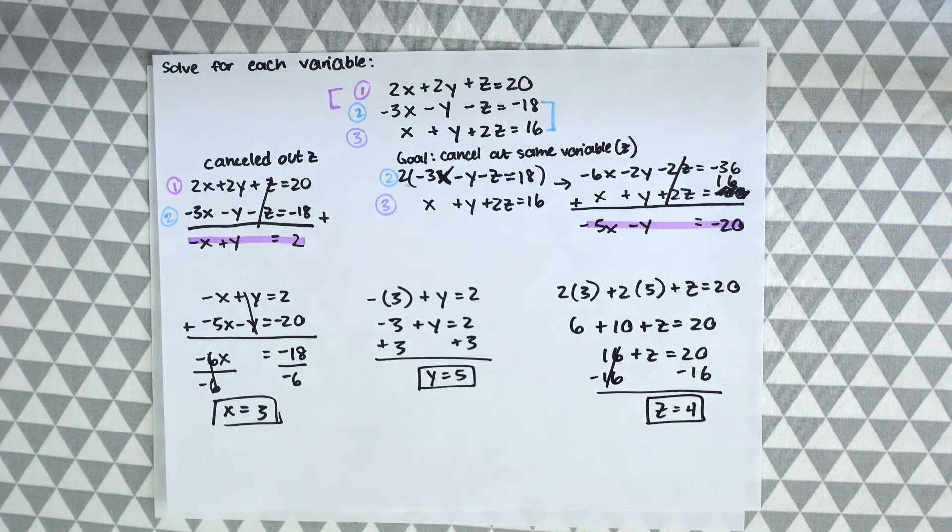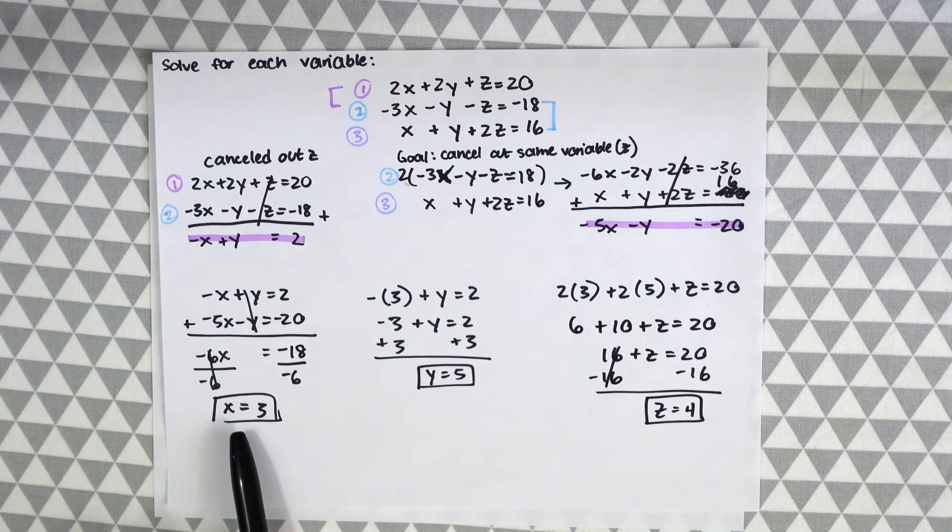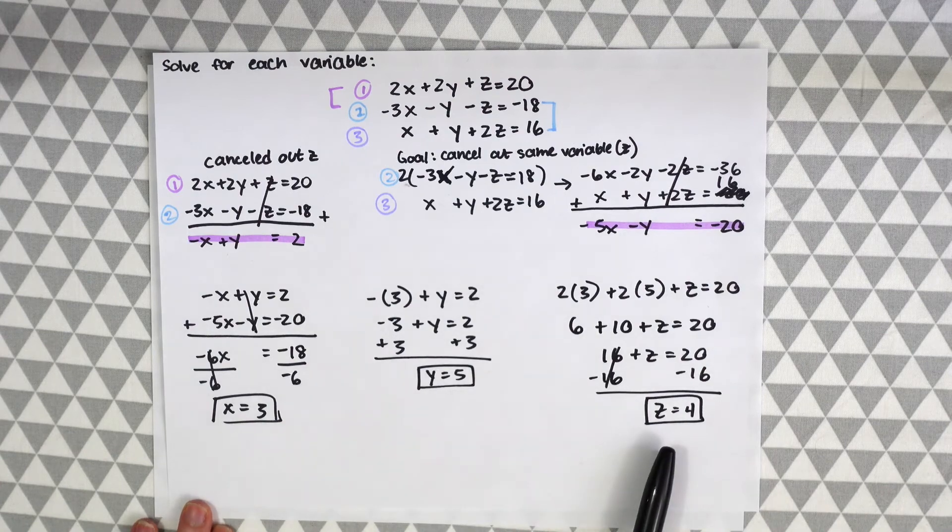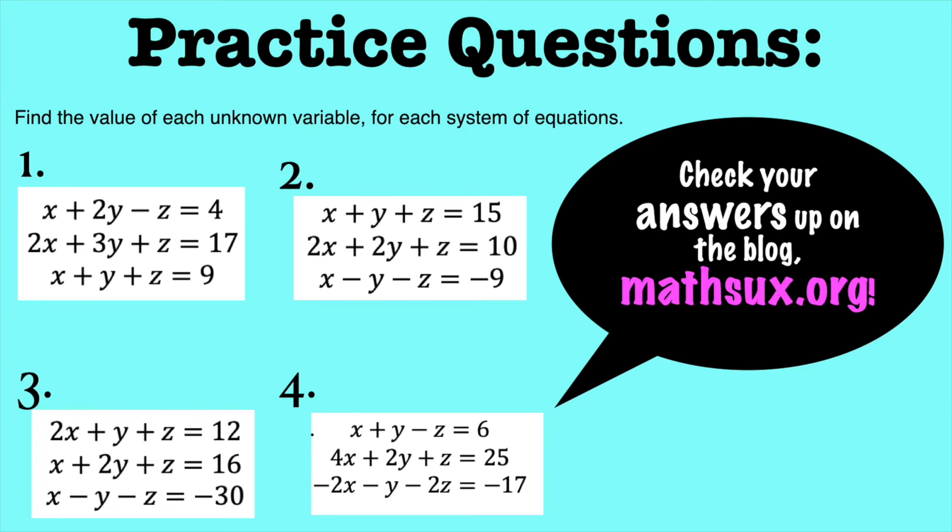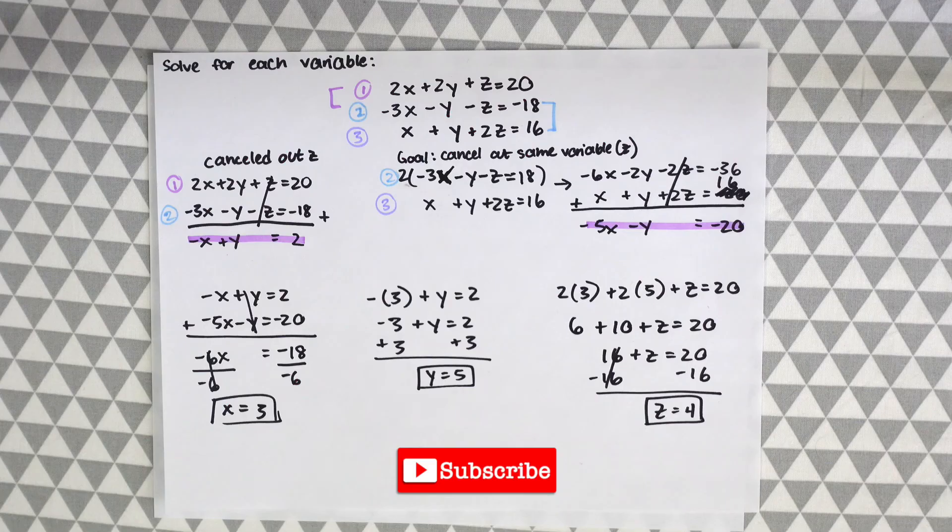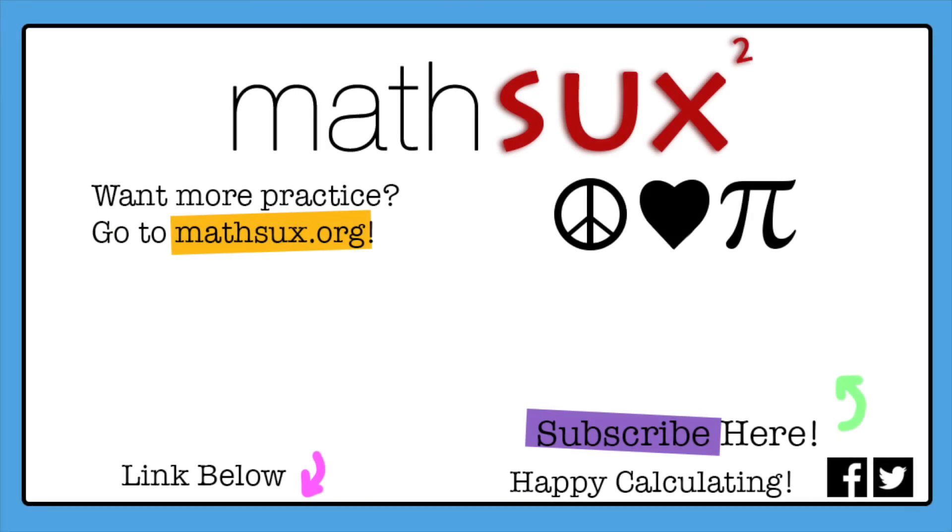So now all together we have our answers of x equals 3, y equals 5 and z equals 4. And if you're looking for more, check out the practice questions right here. The answers are in the description below on my blog mathsucks.org. If this video helped you please give it a like and subscribe. Thanks so much for stopping by and happy calculating.